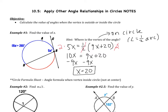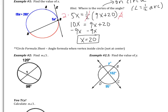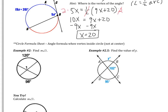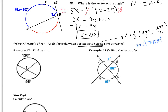Now moving on to examples 2 and 2.5 — these involve a new formula. On the circle formula sheet: angle formula when the vertex is inside the circle, but not at the center. The angle is one half of arc 1 plus arc 2. One note: these are the arcs that sandwich the angle. The best thing is to just jump right in.